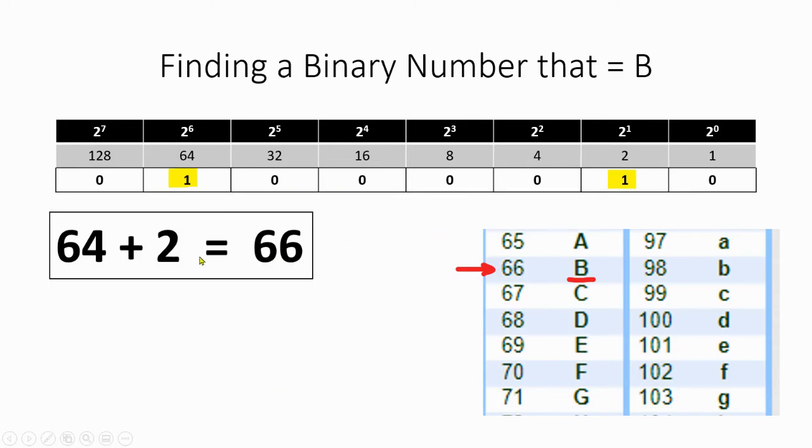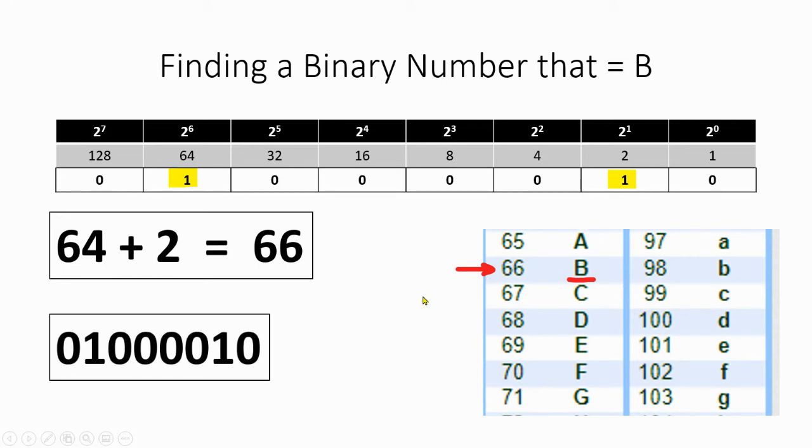So that's going to give us the value that we need. 66 gives us a character of B. And the binary number of 01000010 equals the character B.